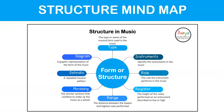Let's look at these in a bit more detail. Form or structure: the type means the type or name of the musical form used. Instruments refers to identifying the instruments in the music. Role is the role the instrument performs. Register is the height of the notes — described as low or high. Range is the distance between the lowest and highest note performed. Phrasing is the shorter sections that combine to make up the music as a whole. An ostinato is a repeated musical pattern, and a diagram is a graphic representation of the form or structure.